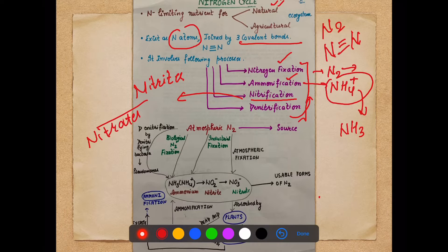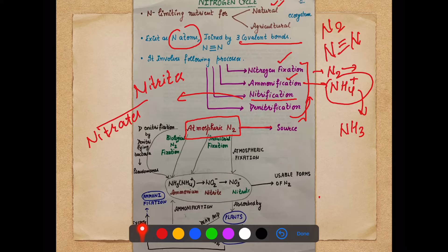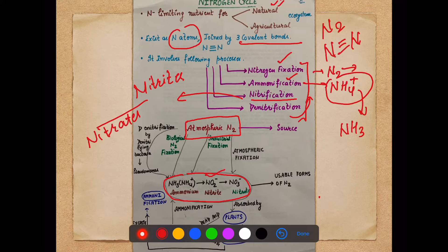Let's see how the nitrogen cycle works. Atmospheric nitrogen is our source, but plants cannot utilize it directly. There are three methods of fixation: biological nitrogen fixation, industrial fixation, and atmospheric fixation. The three main usable forms of nitrogen are: ammonium ions (NH4⁺), nitrite, and nitrate. Whether fixed by biological, industrial, or atmospheric methods (UV rays or lightning), nitrogen is converted into ammonia or further into nitrite and nitrate.